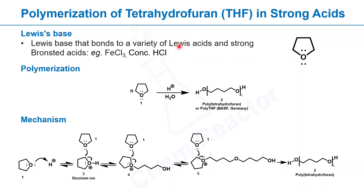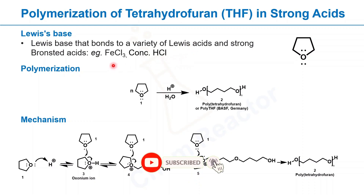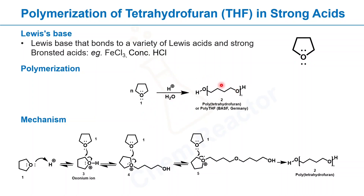How does the polymerization of tetrahydrofuran occur in strong acids? THF is a Lewis base that bonds with a variety of acids and strong Brønsted acids like iron chloride and concentrated HCl. Here is the reaction of polymerization of THF — in the presence of a strong acid, THF forms poly-THF. BASF, a German company, produces this poly-THF on a really big scale under the brand name Polytetrahydrofuran.